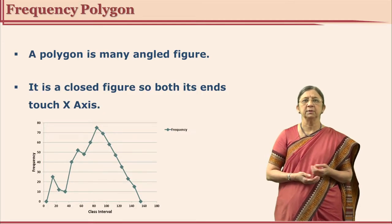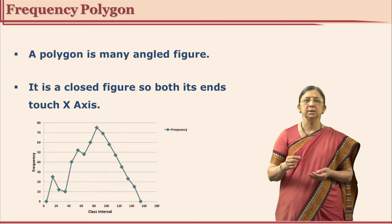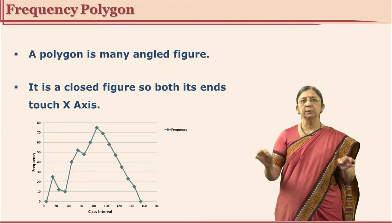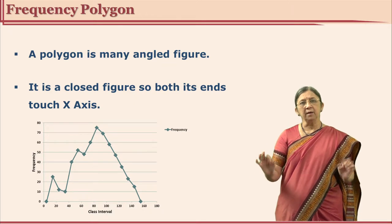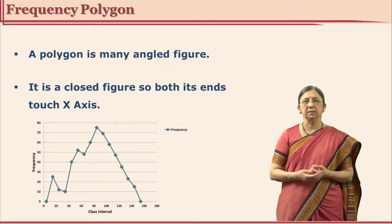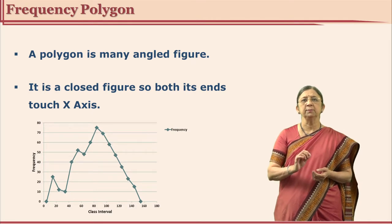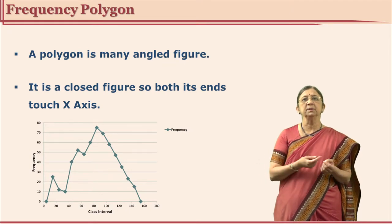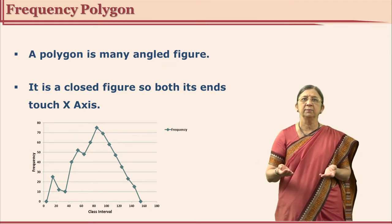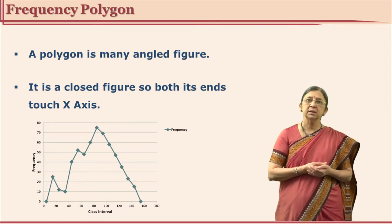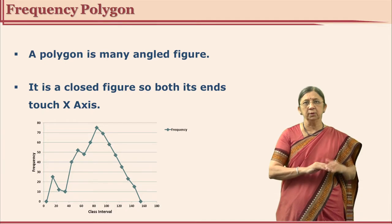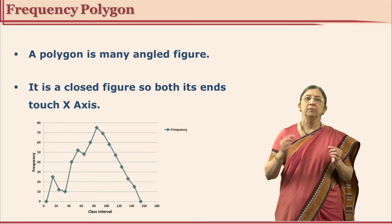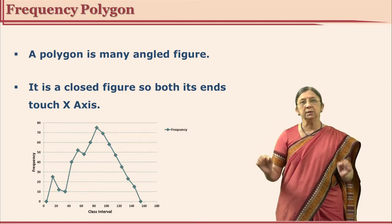Let us see one more type of graph which is frequency polygon. The word polygon means a many-sided figure, and it is a closed figure — the two ends cannot be left in the air; they have to touch the base, which is the x-axis. So any frequency polygon will start from the x-axis and end at the x-axis, because x-axis means 0 frequency. We must get one more class interval below the actual class intervals and one class interval above, because the frequency polygon must touch the x-axis.